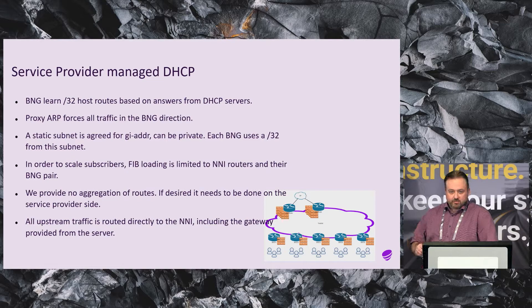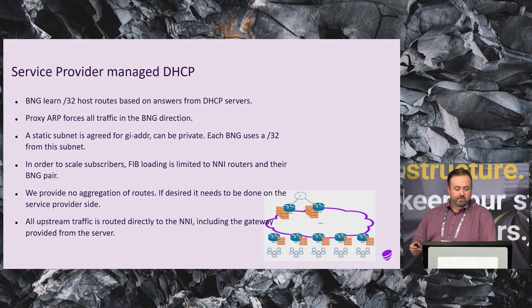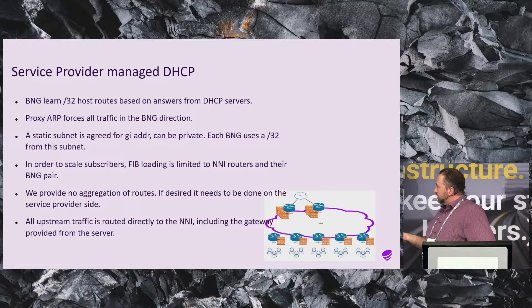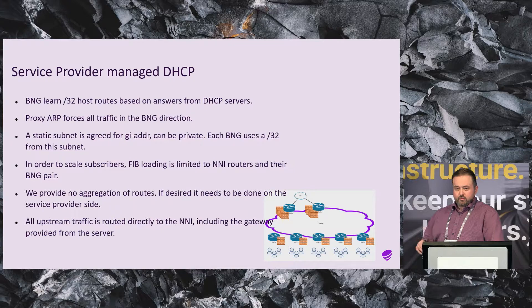With a million subscribers, that tends to be a lot of /32 routes - you probably don't want them everywhere. So we do a lot of controlling of these /32 routes and where they are loaded, so they are only in the routers that really need them. The BNGs down here with the subscribers just know about themselves and the NIs. The rest of the network won't have these in FIBs, except for key places. Sweden is also divided into technical areas, so depending on how many peering points the service provider has, the /32 routes are only in the areas where they're needed.